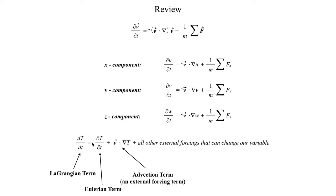The Lagrangian term is equal to the Eulerian plus all the external forces acting on it. One such external force we have to account for in the atmosphere is the advection term, which is a tendency for the fluid to move higher or lower temperatures, or higher or lower pressures around. It's just a tendency for the wind to move stuff around, and that's something we have to account for in the atmosphere.